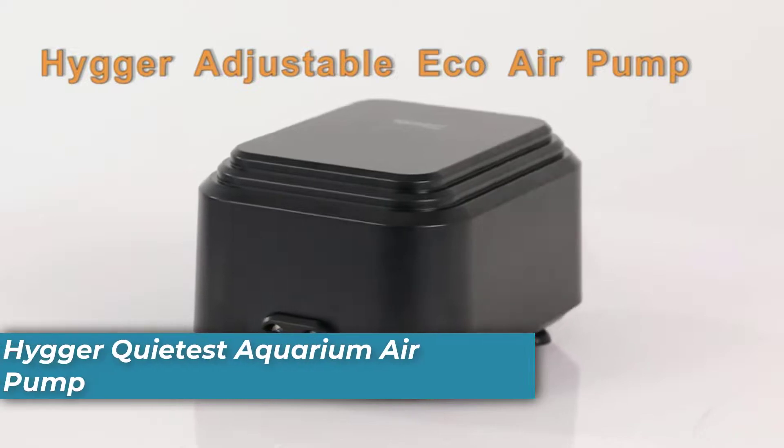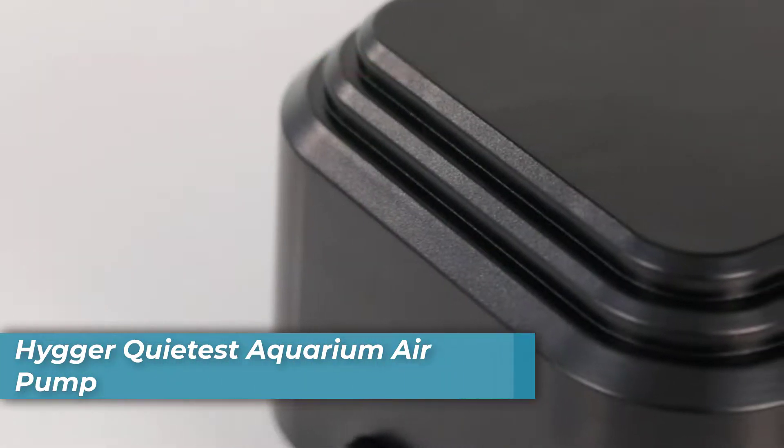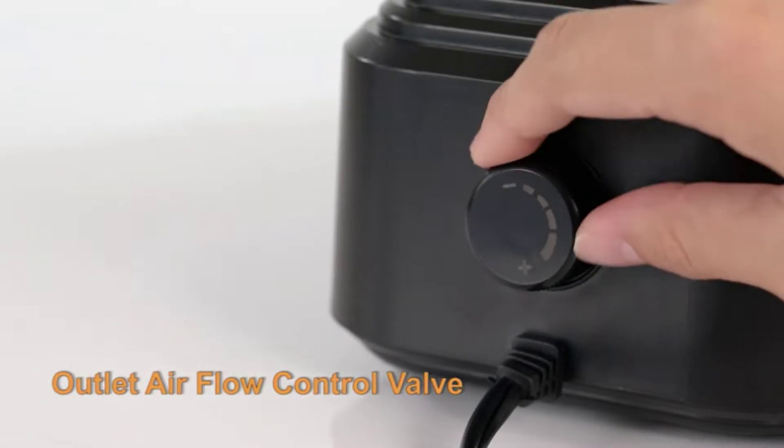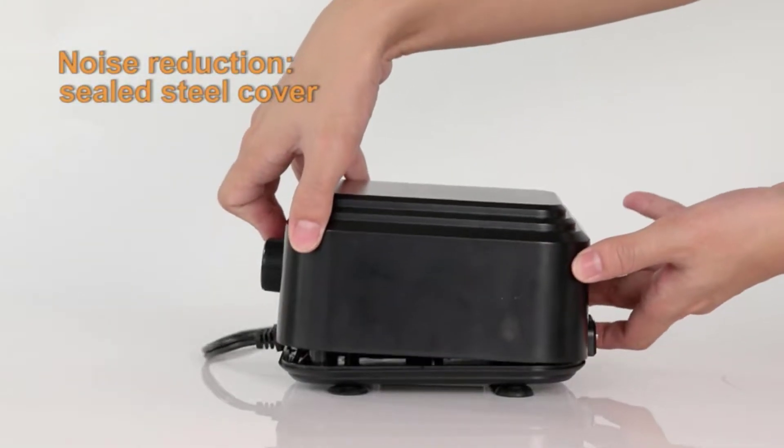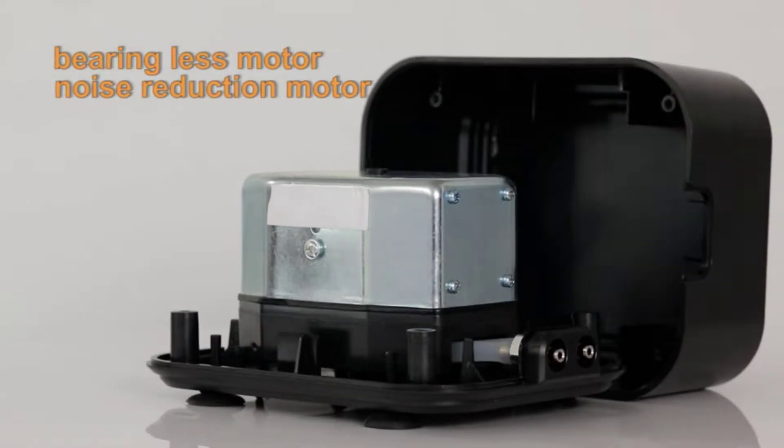Number two is Higger Quietus Aquarium Air Pump. This powerful aquarium air pump provides up to 255 gallons per hour of airflow, making it an extremely effective choice for aerating your fish tank. Its quiet motor technology ensures that you won't disturb or stress out any of the inhabitants in your aquarium.